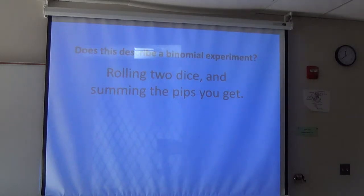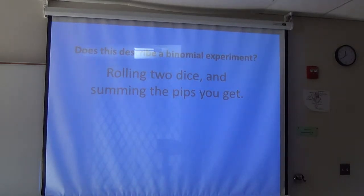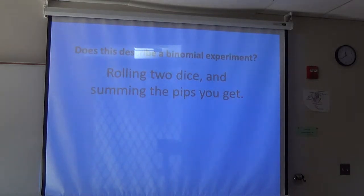We also did this one in class: throw two dice and keep track of the sum on the pips. Binomial? No — there's a whole bunch of possibilities. Too many outcomes. Two through twelve — too many outcomes.